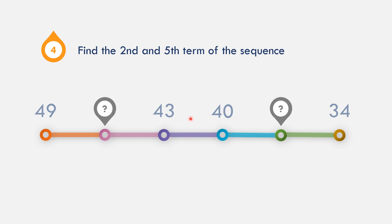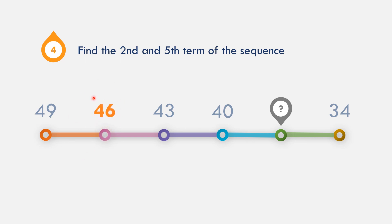43 minus 40 shows we need to subtract 3 to get 40. So 43 minus 3 is 40. There is a possibility the pattern is subtracting by 3. Let us try: 49 minus 3 is 46, minus 3 is 43, minus 3 is 40, minus 3 is 37, minus 3 is 34. So the second term is 46 and the fifth term is 37.